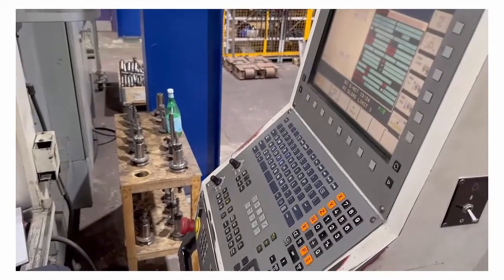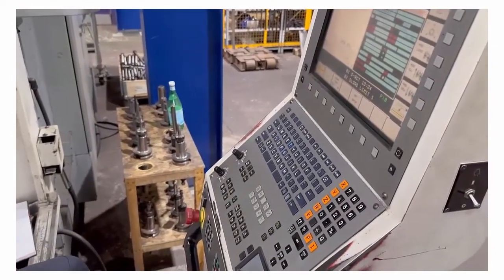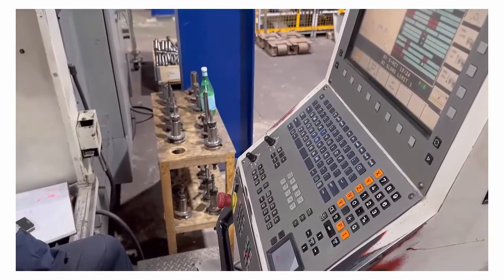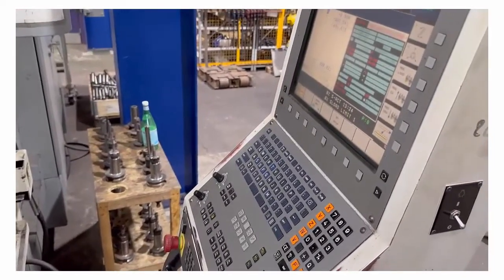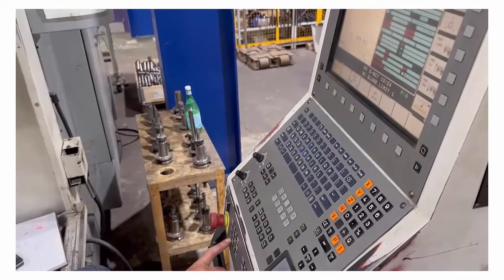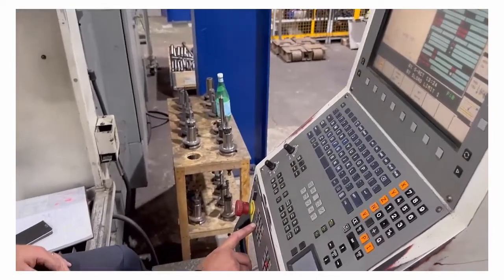Because we've got no tool length active and there are no tools in there, all we've got to do each time is just bring that tool down to the top of the job, zero the Z, and it's job done. It'll all work. So we've set in no data, no tool, no nothing, so just bring that down.